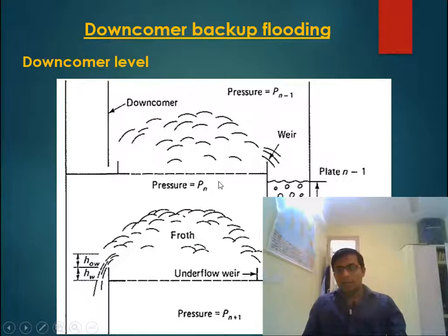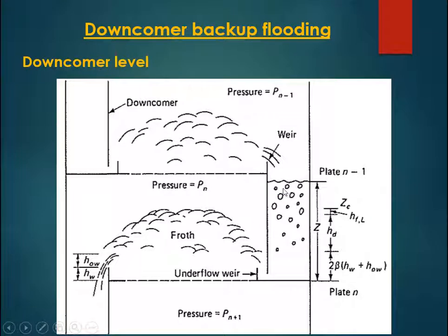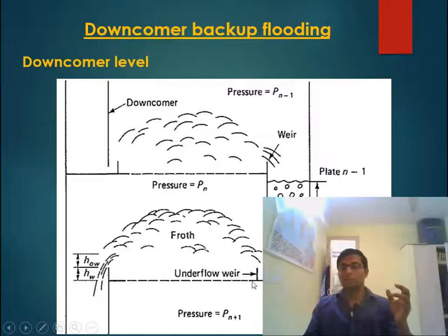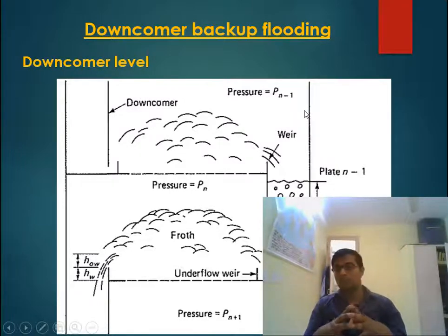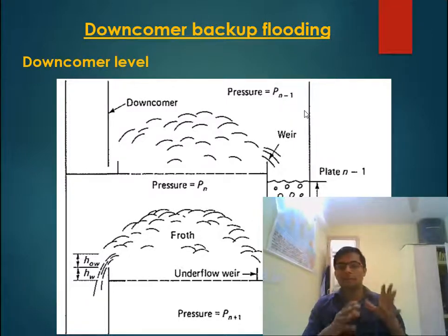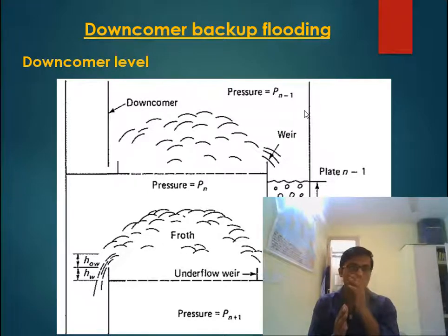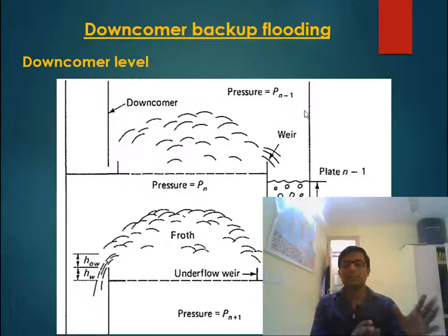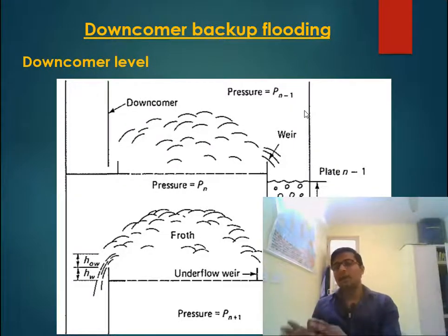The pressure above the downcomer level is Pn minus 1, and the downcomer fluid has to flow to a region where pressure is Pn plus a liquid head. This means downcomer liquid has to flow from a low pressure region to a high pressure region. Liquid always flows from high head to low head — not necessarily from high pressure to low pressure. Any fluid may flow from low to high pressure if the head is higher at the low-pressure region.